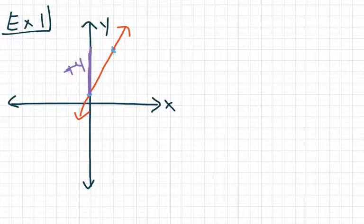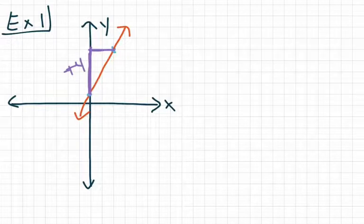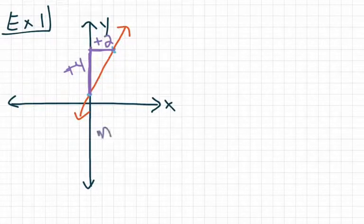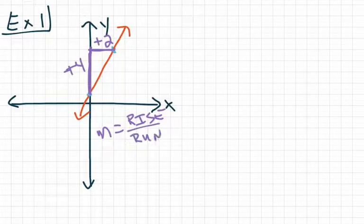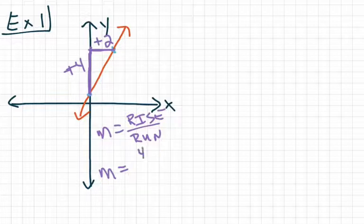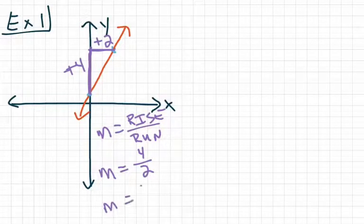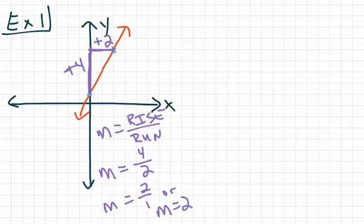Now from that point, I need to run to the right — we should always end up running to the right. If we're not running to the right, then we did not start with the point that's further to the left. This run line has a value of plus 2. We need to remember slope is equal to rise over run. In this case, our slope is equal to our rise of 4 over our run of 2, which we can simplify to 2 over 1, or we can just say that m equals 2. That's our first example of finding slope from a line.